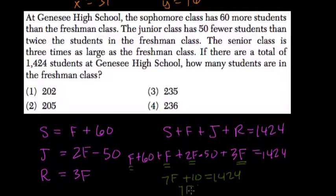So 7 goes into 1400 200 times, and there's 14 left over, so it's 202. F equals 202.